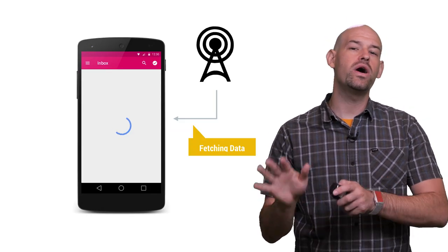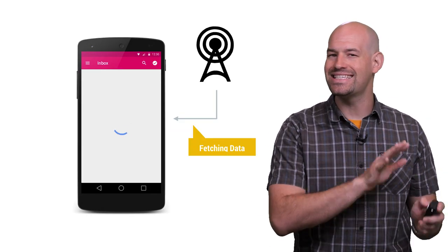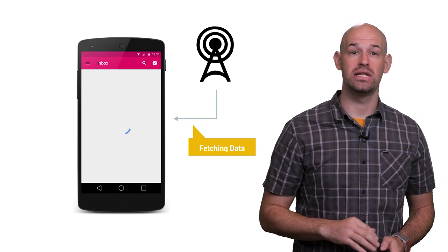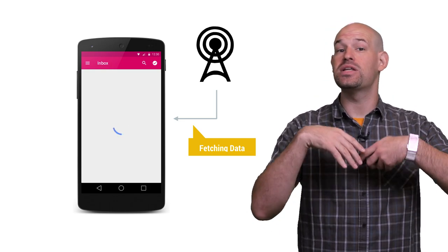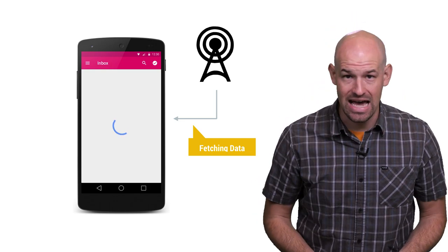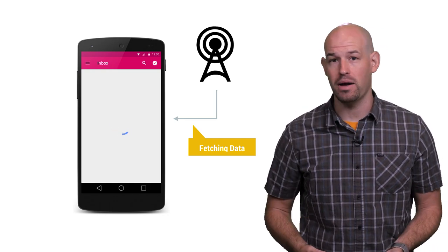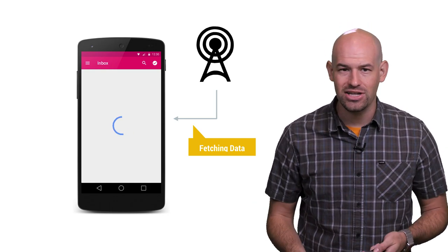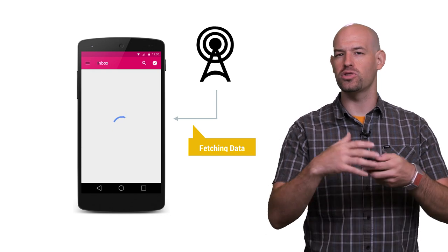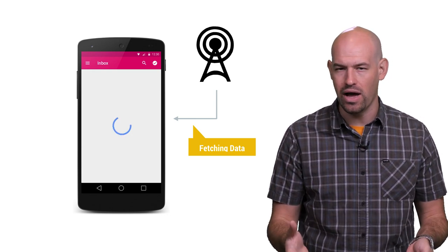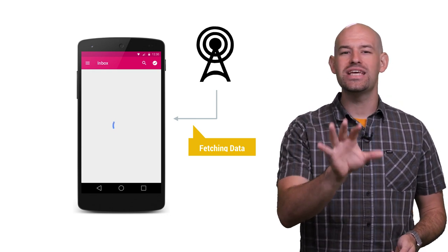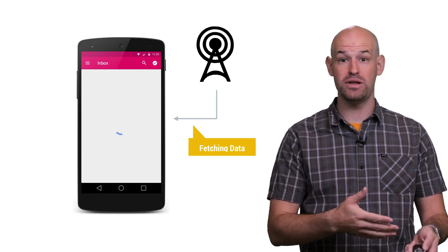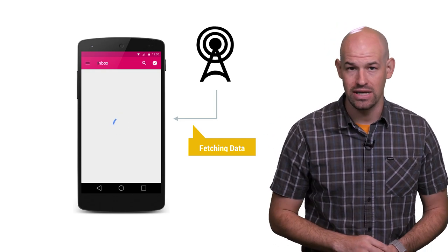The problem is in what the user is seeing while they're waiting for you to fetch the updated information. Sure, if the user has been using the app, chances are the screen is already populated with data. But when you're responding to a gnarly context change or loading the app for the first time in a while, there's no data to pre-populate your views. So you have to default to a spinner on top of a blank screen.